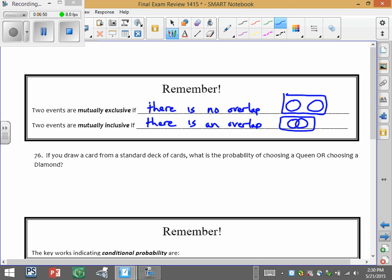So if you draw a card from a standard deck of cards, what's the probability of getting a queen or a diamond? So the word or means we're going to add. Remember, when you do probability of A or B, we do probability of A plus the probability of B.